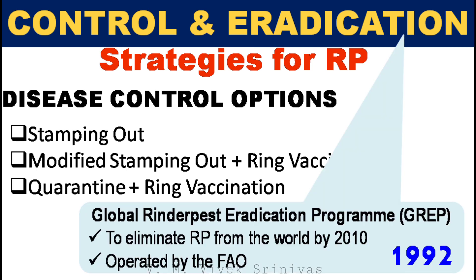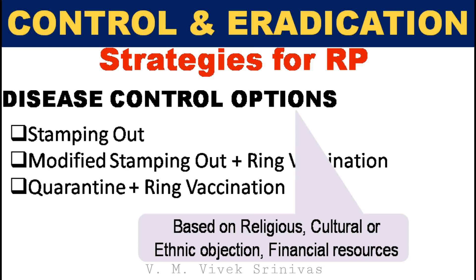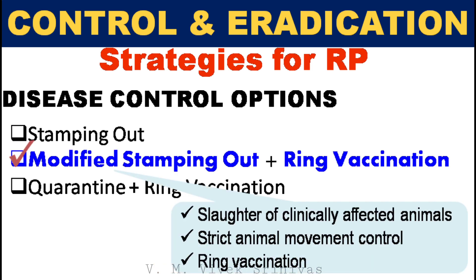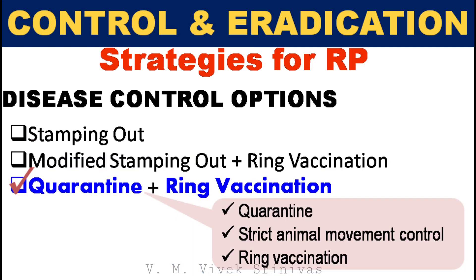For control and eradication, in 1992 the Global Rinderpest Eradication Program was initiated by FAO to eliminate Rinderpest from the world by the year 2010. In case of a disease outbreak, one of the following control options was chosen based on religious, cultural, or ethnic objections and financial resources. The first option was stamping out, where all clinically affected, suspected, and exposed susceptible animals were slaughtered and carcasses disposed of by burning or burying. The second option was modified stamping out with ring vaccination, where only clinically affected animals were slaughtered and strict animal movement restrictions and ring vaccination were carried out. The third option was quarantine with ring vaccination, where clinically affected animals were quarantined and strict movement restrictions and ring vaccination were applied to susceptible populations.